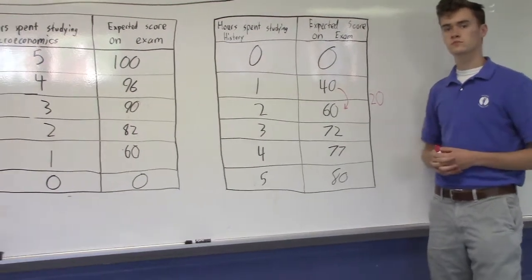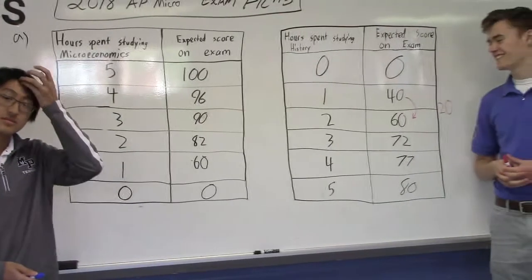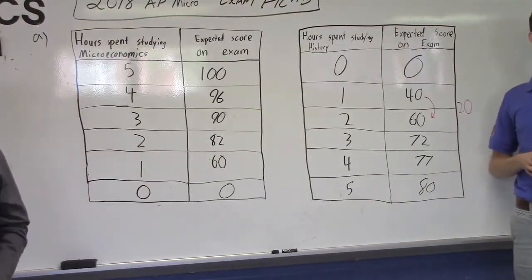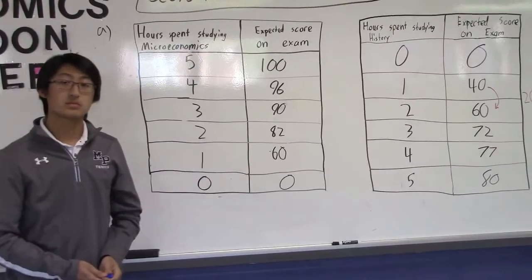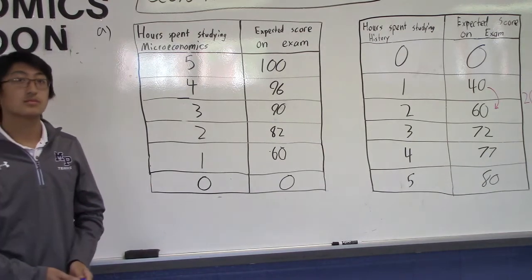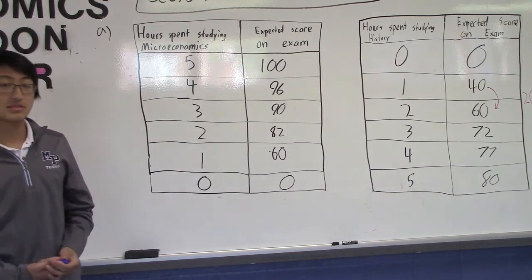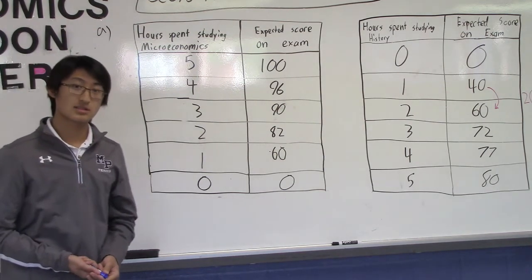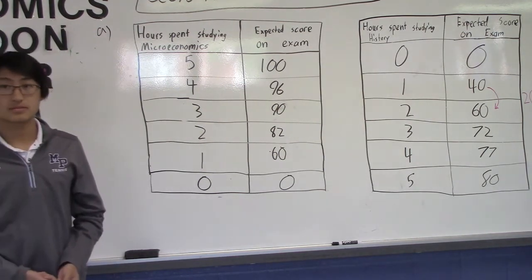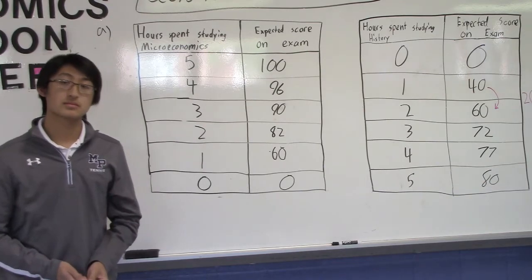Assume, and we always in economics use that word, assume that Noralia has a goal of maximizing the sum of her test scores. Do you guys do that? I'd like to get the best you can on both. The score on microeconomics plus the score on history. Here's the question. How many hours should she study for each exam?